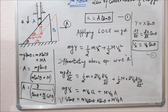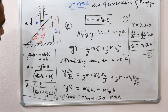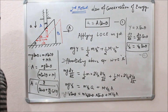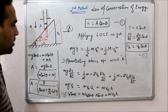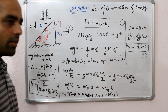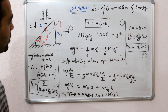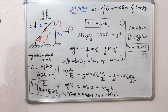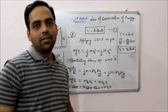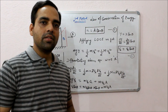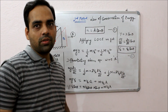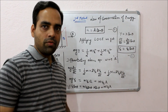So friends, we have seen that with the help of the law of conservation of energy we can easily find out the acceleration of the wedge. This method is very easy compared to Newton's laws of motion because in Newton's laws of motion we have to draw the free body diagram. In the next session I will be discussing a few more interesting problems based on Newton's laws of motion. Thank you for watching.